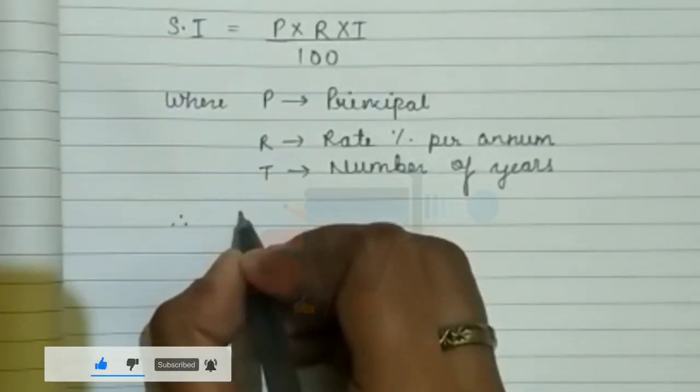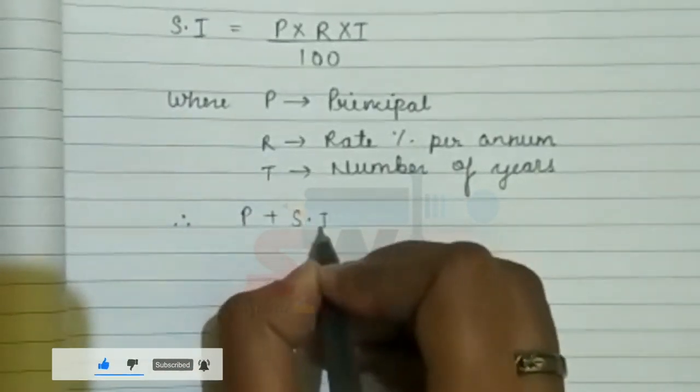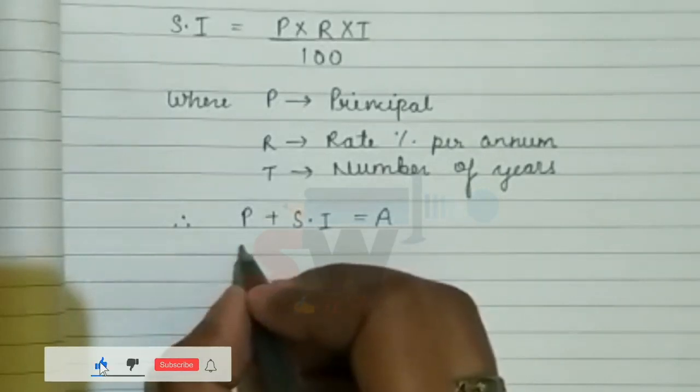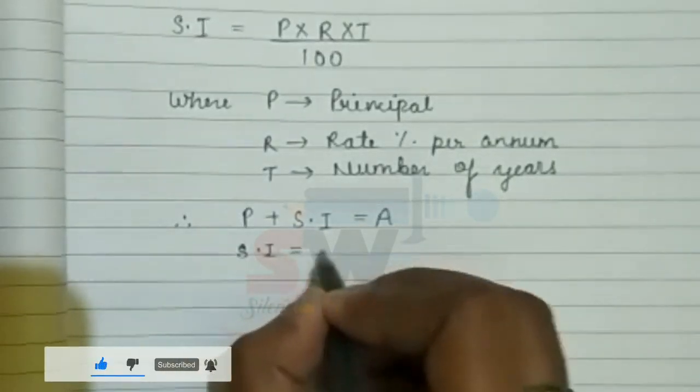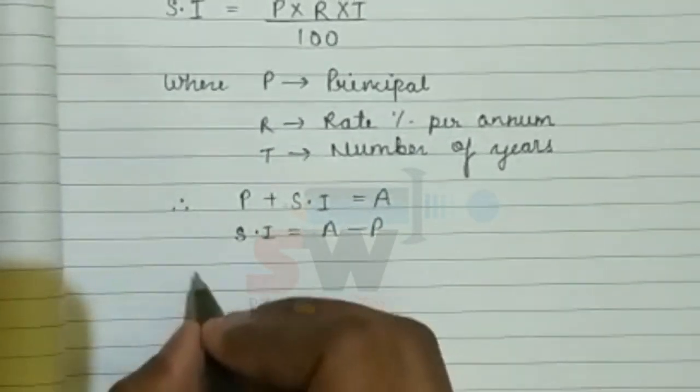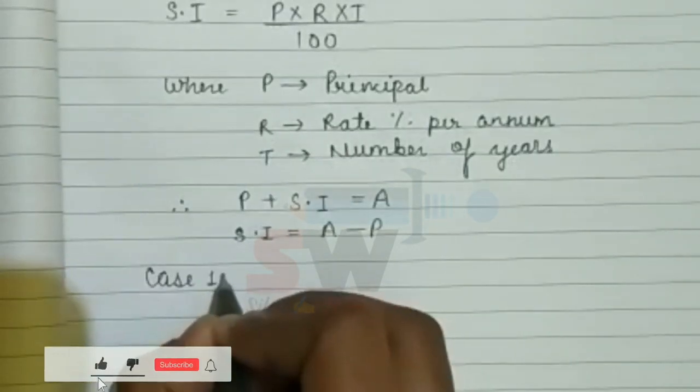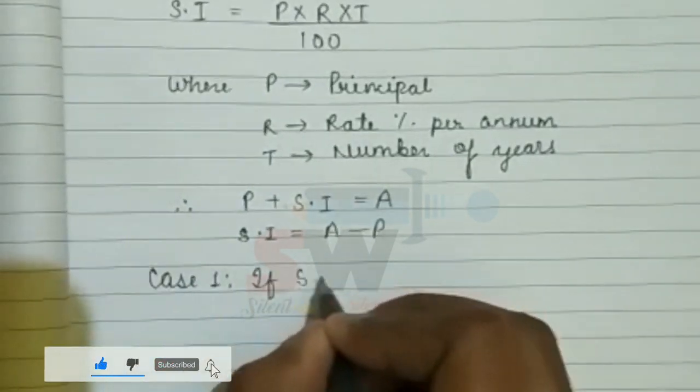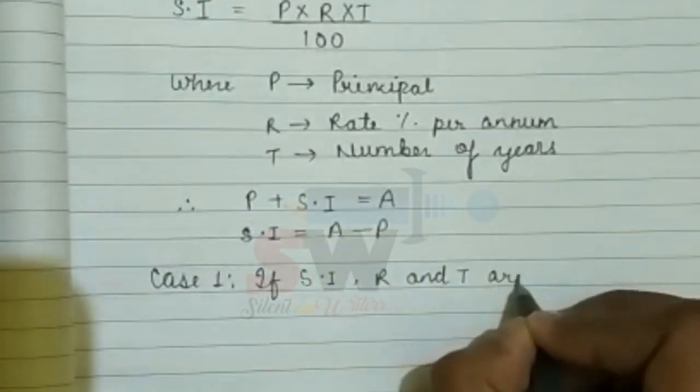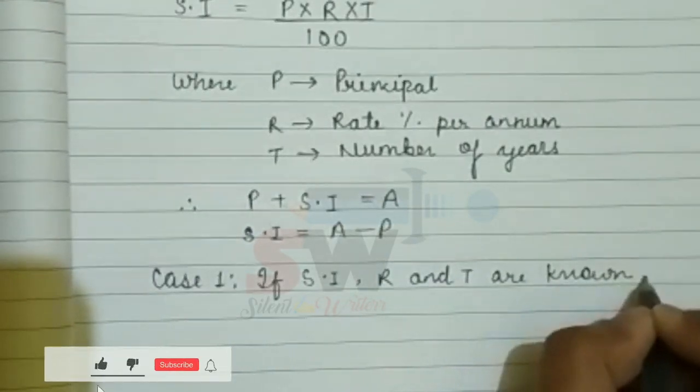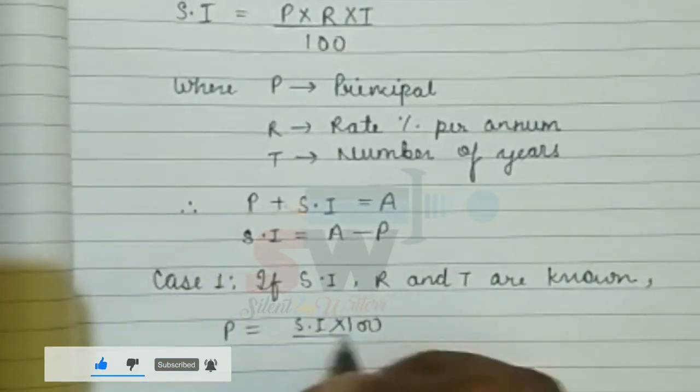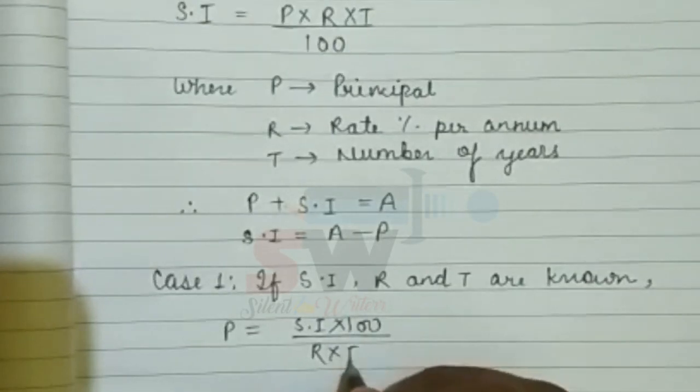P + SI = A, and SI = A - P. Here are some cases. Case 1: If SI, R, and T are known, then P equals SI × 100 divided by R × T.